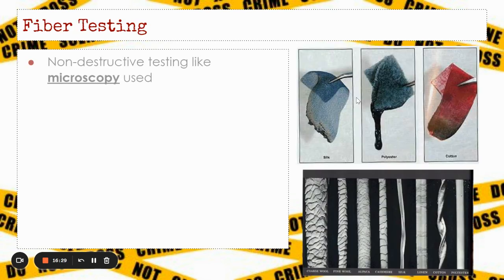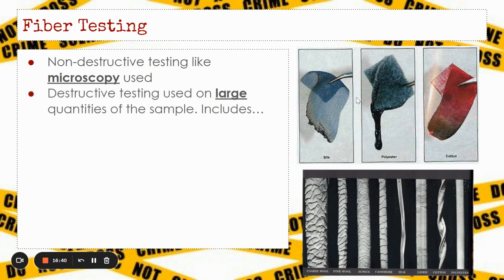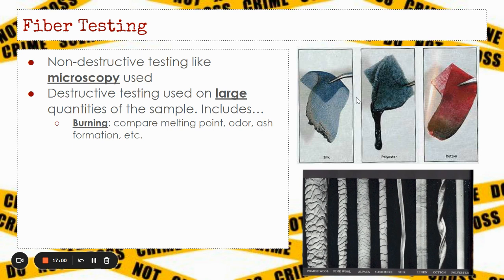When we test fibers, there are non-destructive tests in which the sample is kept intact to be used later — we can use microscopes to look at them. If we have large quantities of the sample, we can do destructive tests that would ruin the sample, but if we have enough of it we can do the following tests. We can burn the fiber in order to compare the melting point, determine if there's any odor, ash, or if it melts.